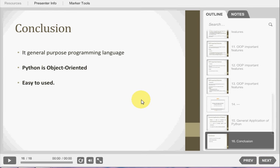Conclusion. It is a general purpose programming language. Python is object-oriented. It supports the object-oriented features such as class, object, encapsulation, inheritance, abstraction and so on. And easy to use because the syntax or code of Python is very small as compared to the other programming languages.